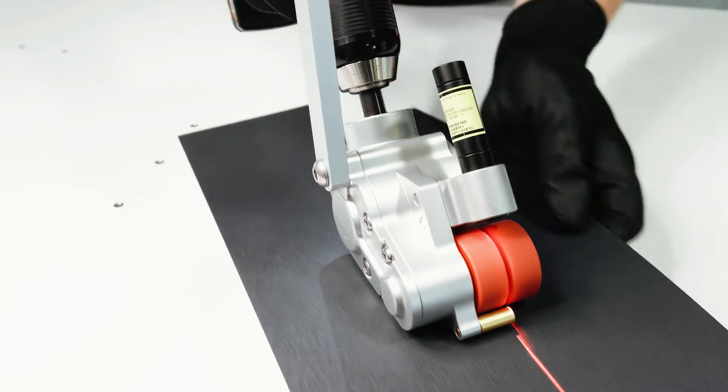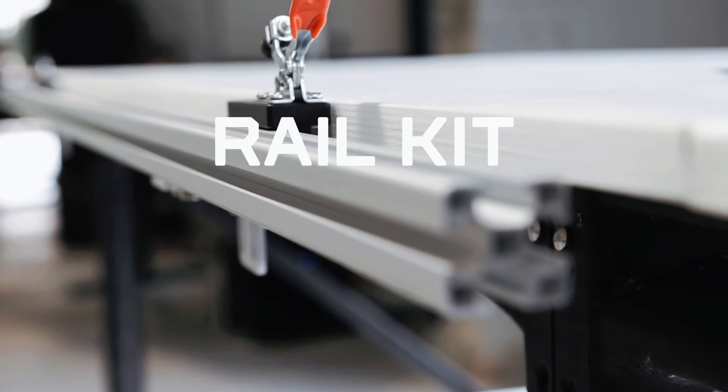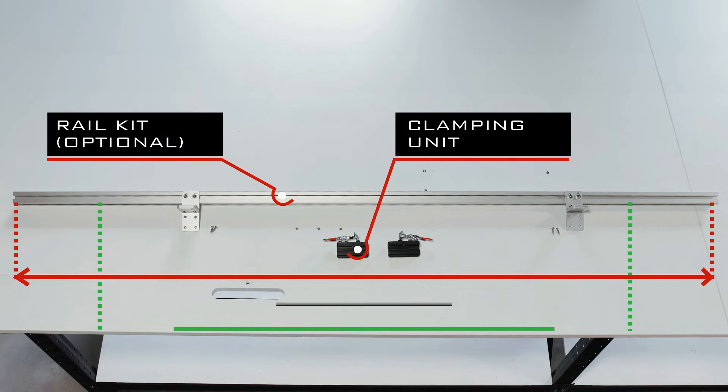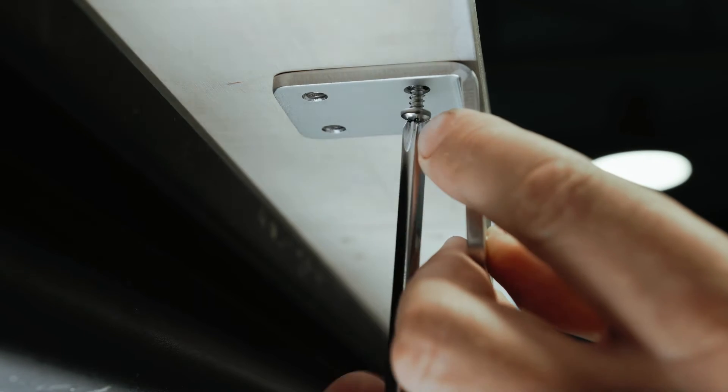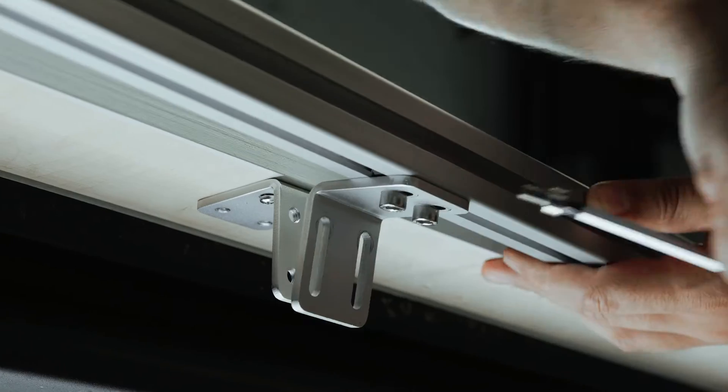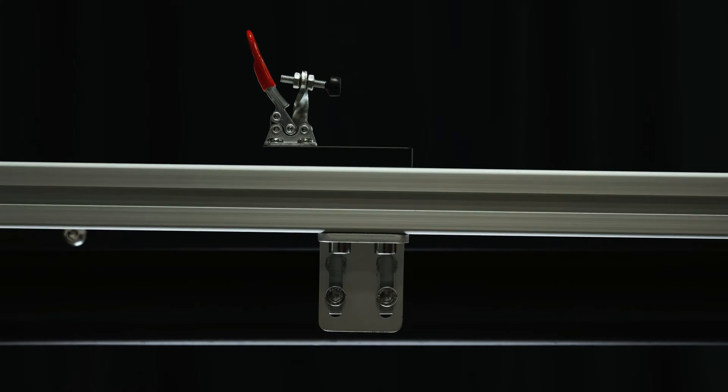A rail kit is available as an accessory for easier metal sheet cutting. To mount the rail kit, secure the mounting brackets beneath the table and align the rail so that the fixing clamps are properly positioned with the table.